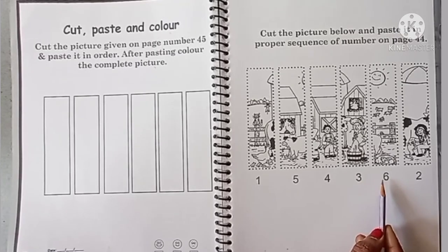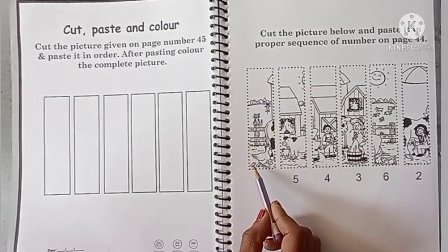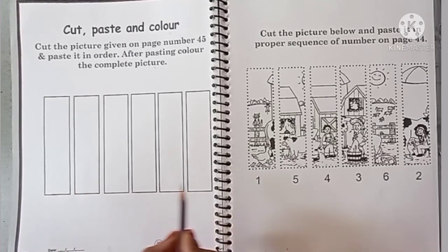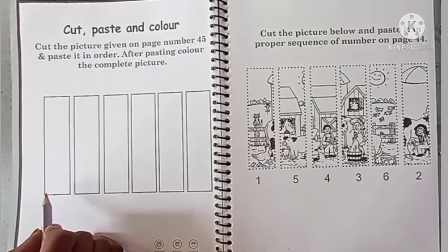What do you need to do with the dotted line? Here you will cut with help from your mother, and you will paste it in sequence. Suppose this is number 1, you will cut this portion and here you will paste it.